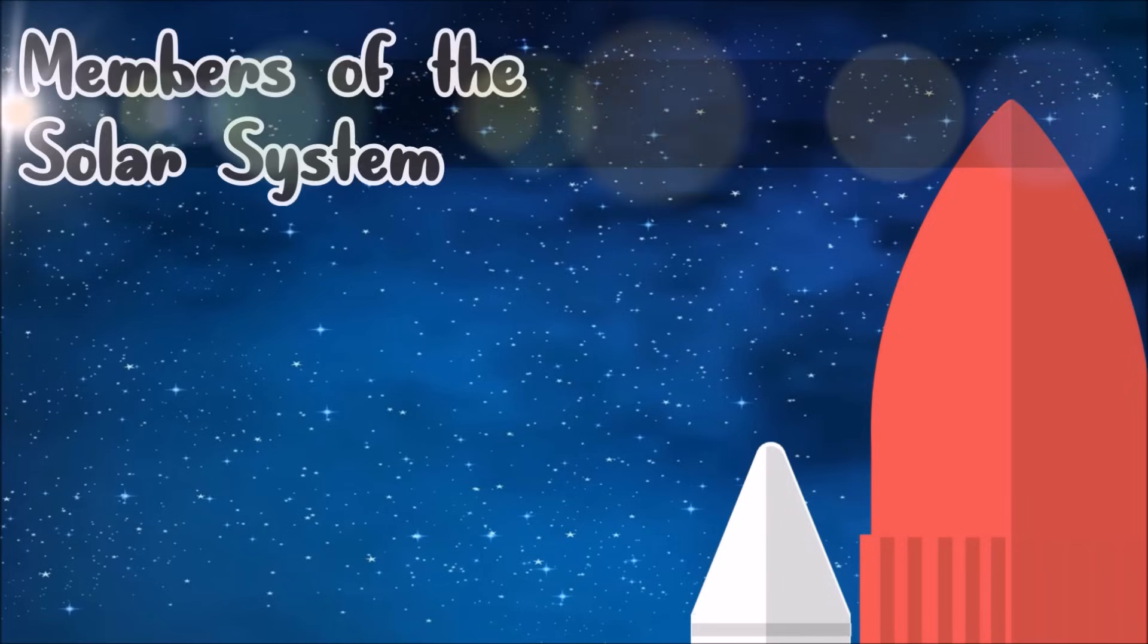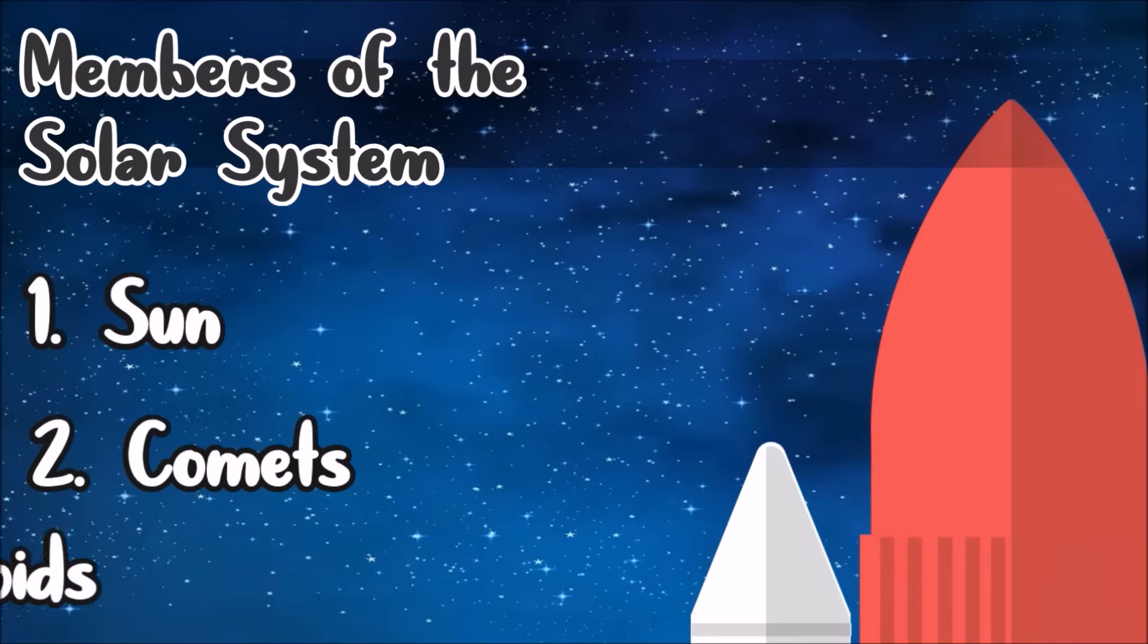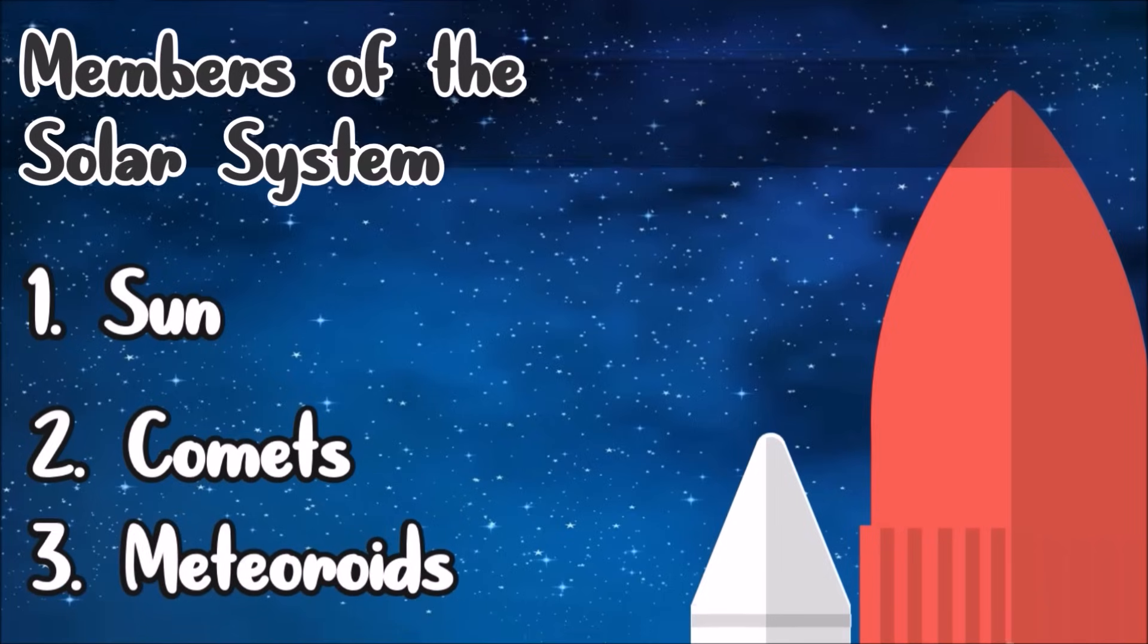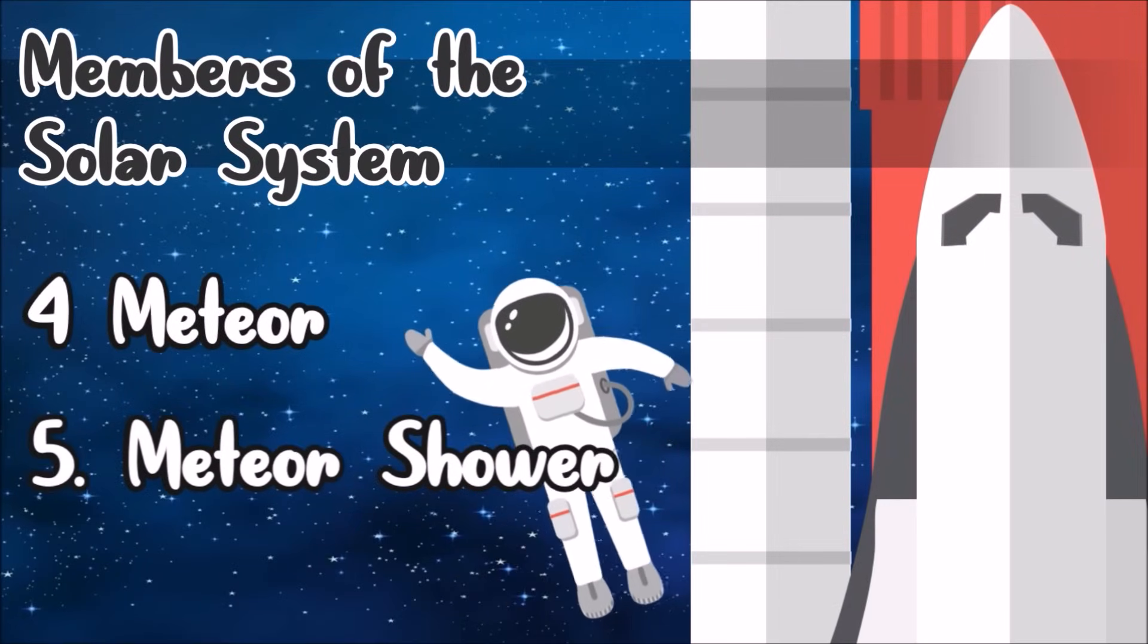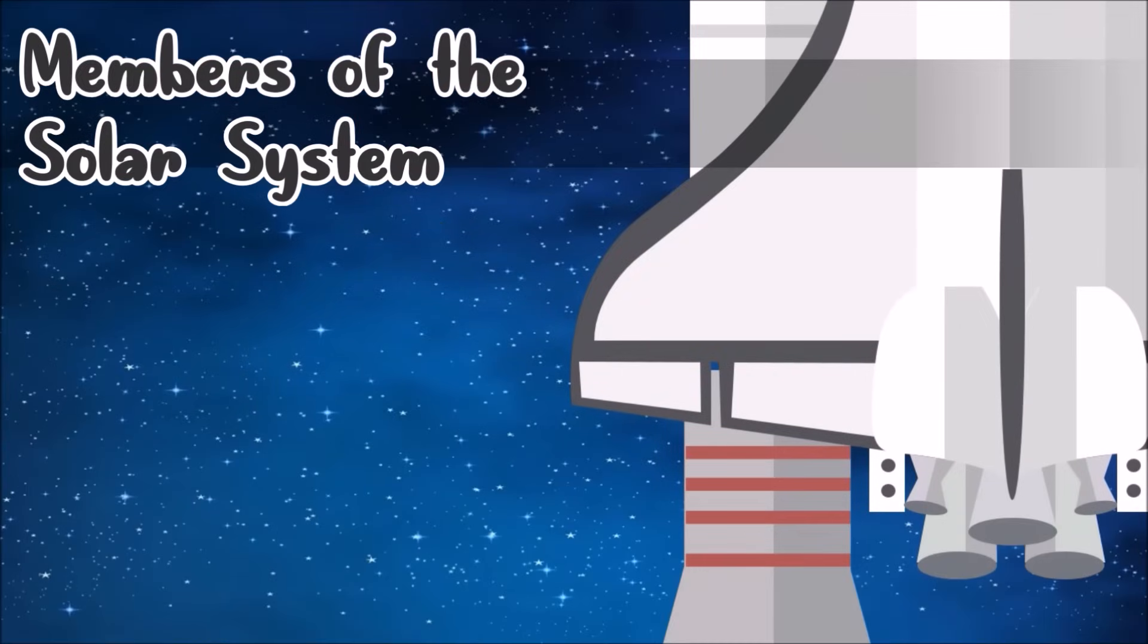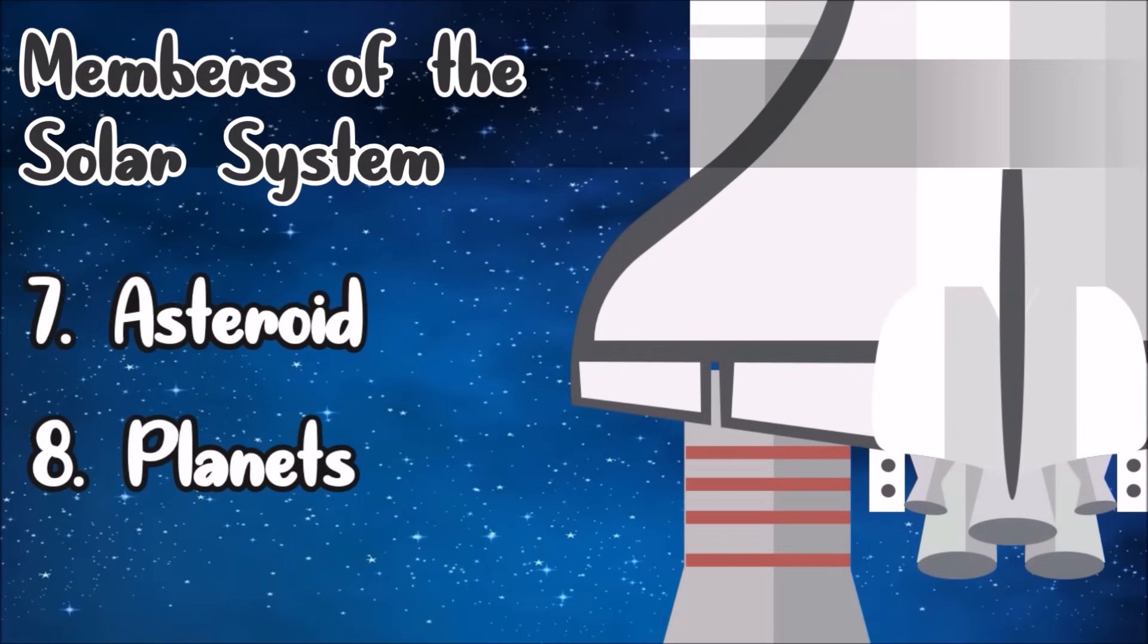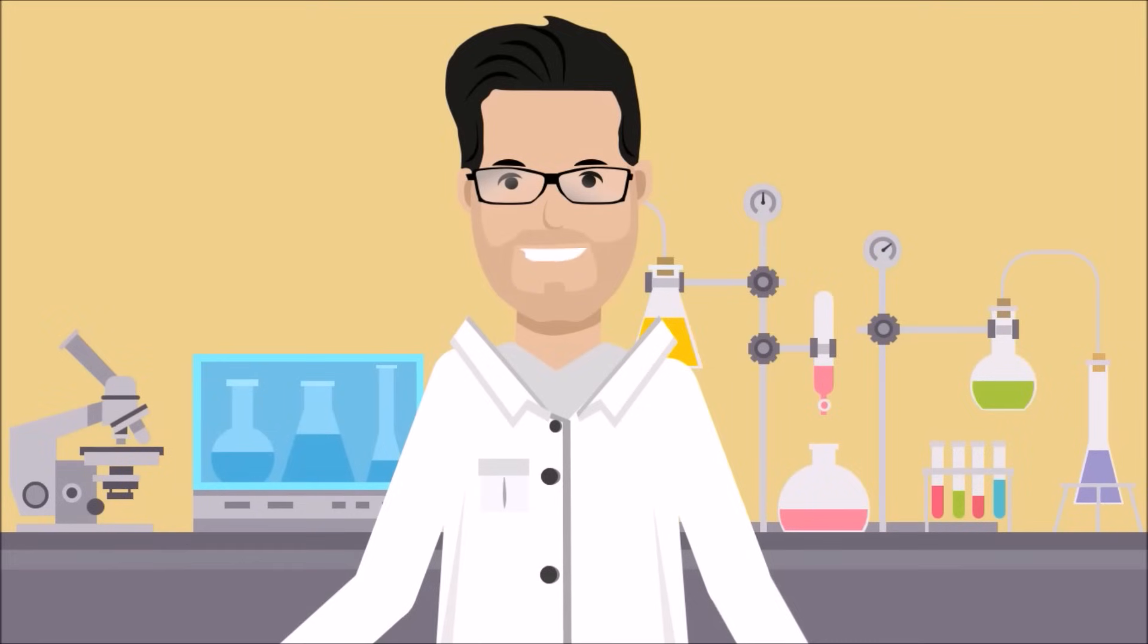Here are the members of the solar system: the sun, comets, meteoroids, meteor, meteor shower, meteorites, asteroids, the planets, and dwarf planets. Let's talk about this one by one.